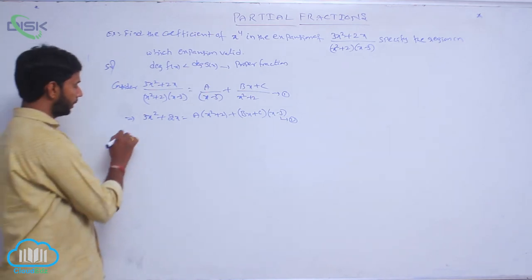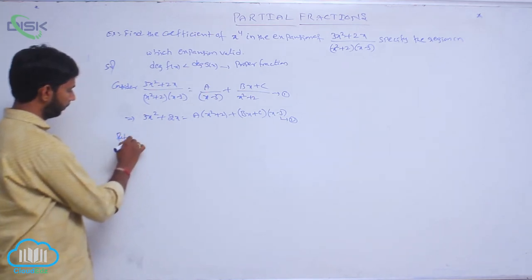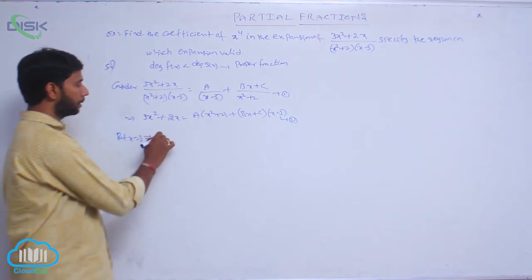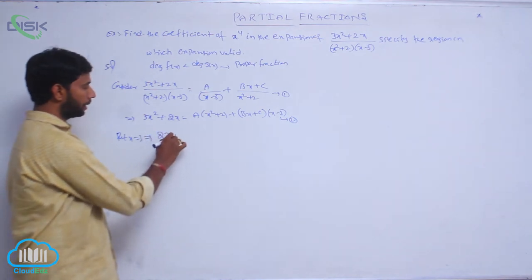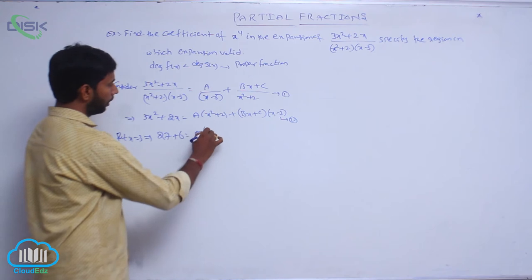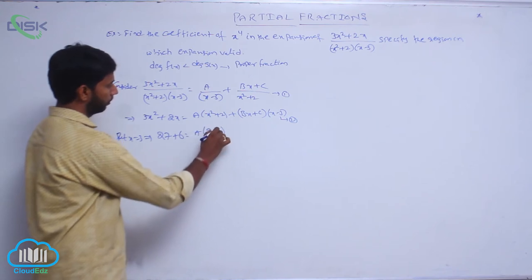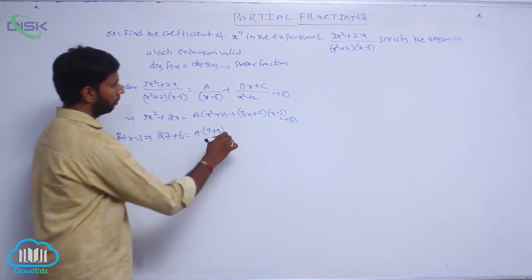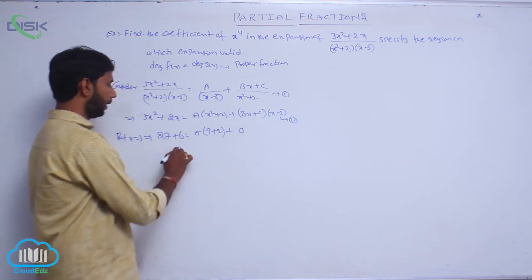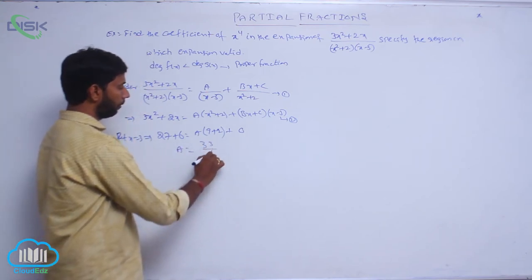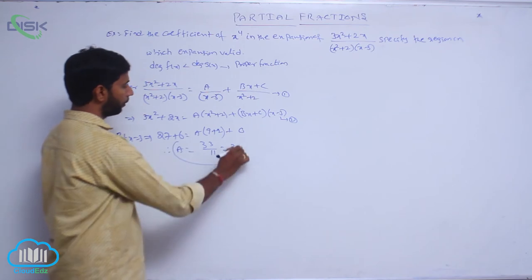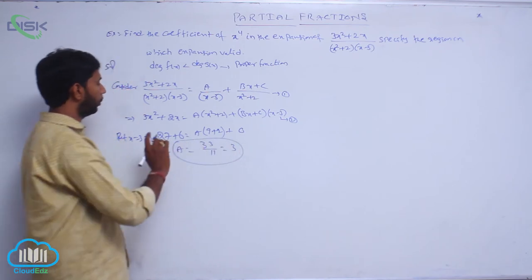Put x = 3. That implies 27 + 6 = A(9 + 2) + 0. Therefore, 33 = 11A, so A = 3. The value of A is equal to 3.